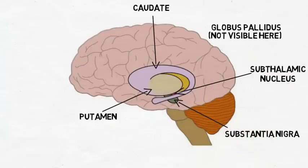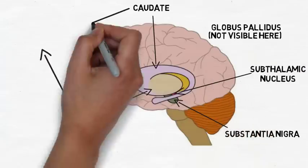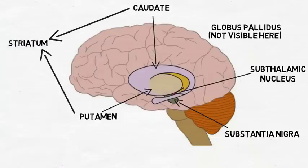The caudate and putamen are often referred to collectively as the striatum, and the globus pallidus and substantia nigra are each made up of multiple nuclei. Although there are a variety of non-motor functions associated with the basal ganglia, they are best known for their role in facilitating movement.